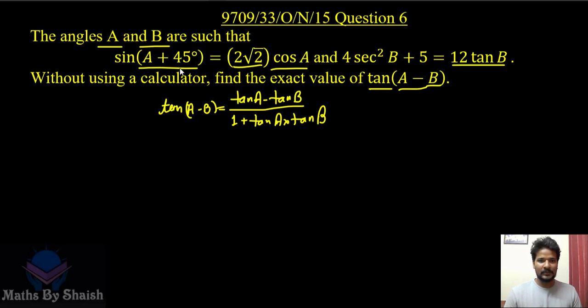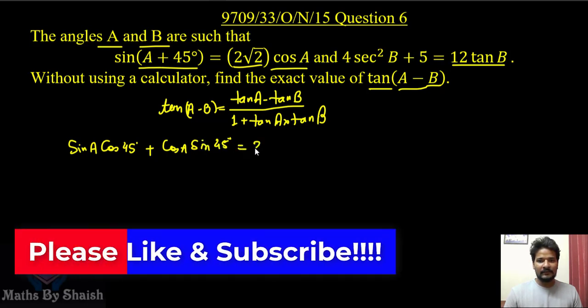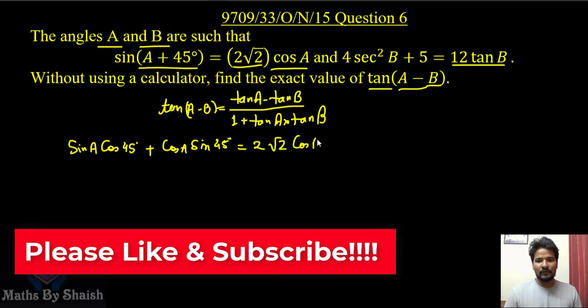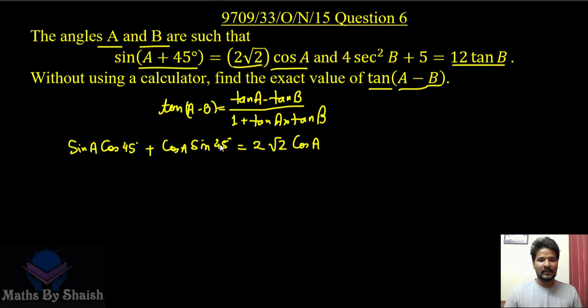That is sin A cos 45° + cos A sin 45° = 2√2 cos A. And now we know that cos 45° and sin 45° is the same, that is √2 over 2. So it is going to be sin A · √2/2 + cos A · √2/2. It is sometimes 1/√2, that is also fine. Both are the same. And then it is 2√2 cos A.